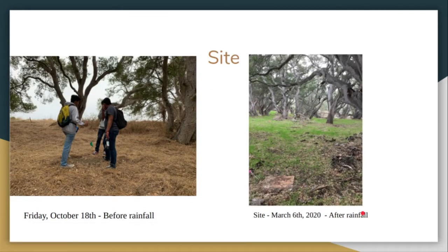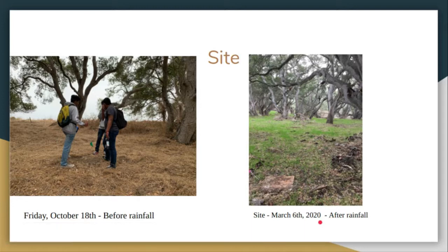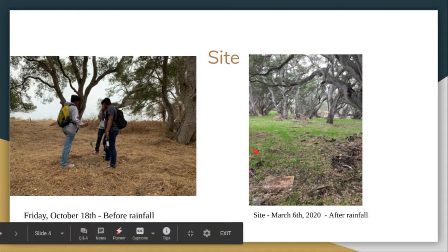Here is a side-by-side comparison of what the study site looked like before it rained, with the picture on the left, and after it rained, with the picture on the right. What sticks out the most in these two pictures is the amount of grass that has grown after it rained, as shown by all the green in this area.